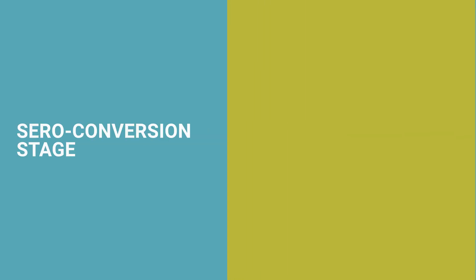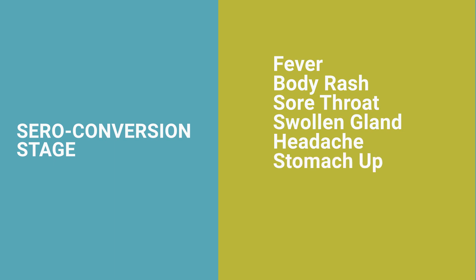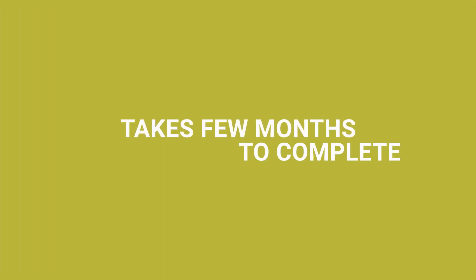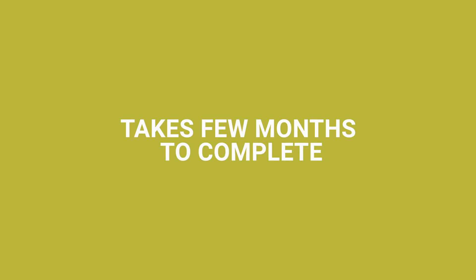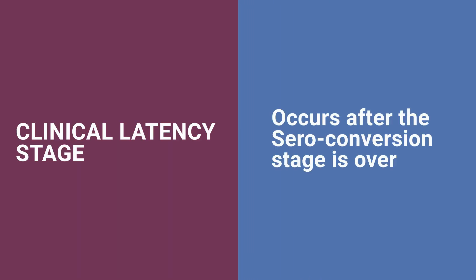As the disease progresses over months, symptoms such as fever, body rash, sore throat, swollen glands, headache, stomach upset, joint pain, and muscle pain may arise. These symptoms occur because the body is fighting off an infection. This is the seroconversion period and can take a few months to complete.